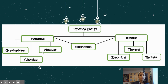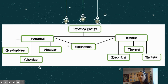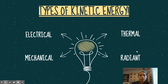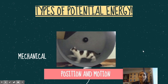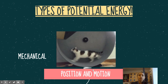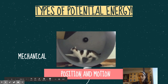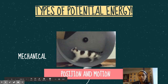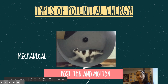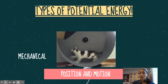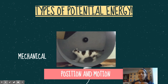So that was all potential energy — there are four essential forms of potential. Mechanical is both potential and kinetic, so we'll get into that. Now let's move on to kinetic energy examples: mechanical, electrical, thermal, and radiant energy. Mechanical, again, is position and motion. The reason mechanical is both kinetic and potential is because position is more potential and motion is more kinetic, but it needs both to be classified as mechanical energy.